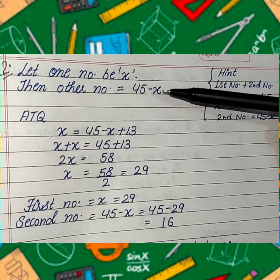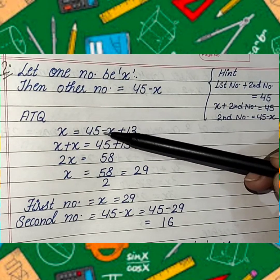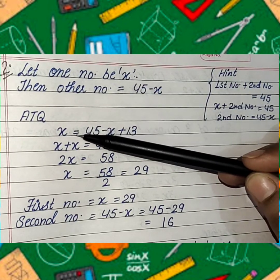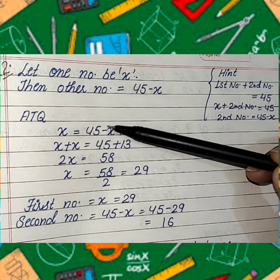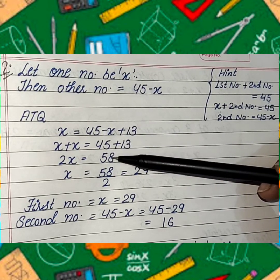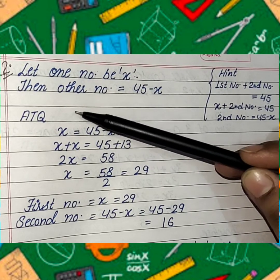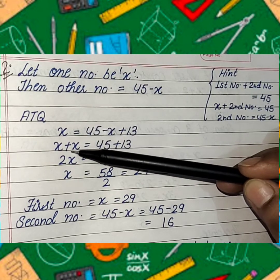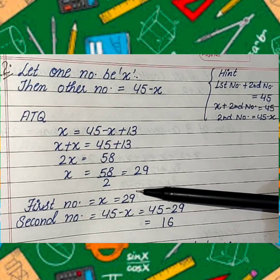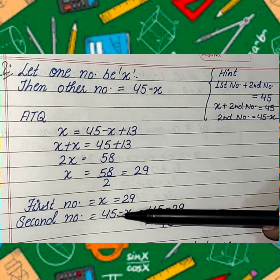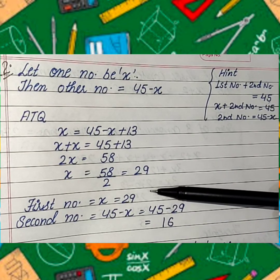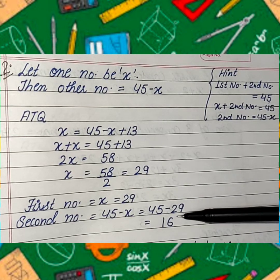But it is given in the question that the first number is 13 more than the other — pahla number dusre se 13 zyada hai. Then x, the first number, equals 45 minus x plus 13. More than means plus 13. 45 plus 13 gives 58. On transposing minus x to the left side it gives plus x, so x plus x equals 2x. Then x equals 29. So the first number is 29, and the second number is 45 minus x, that is 45 minus 29, which equals 16. So the two numbers are 29 and 16, and their sum is 45.